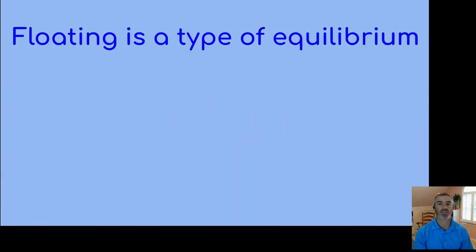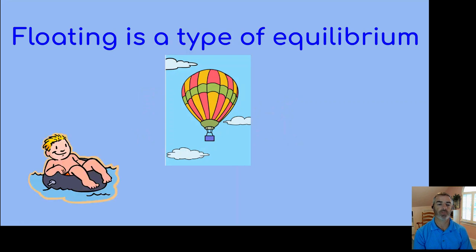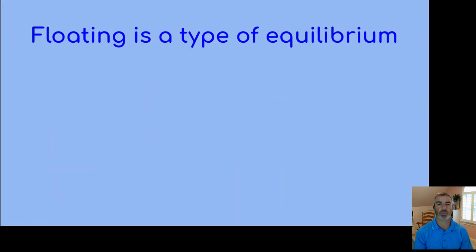Floating is a type of equilibrium. You've got a hot air balloon as an example, you also have a kid floating on an air tube, and also a massive boat floating on the water. These are all types of equilibrium.